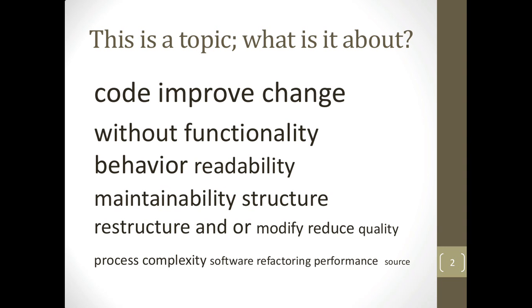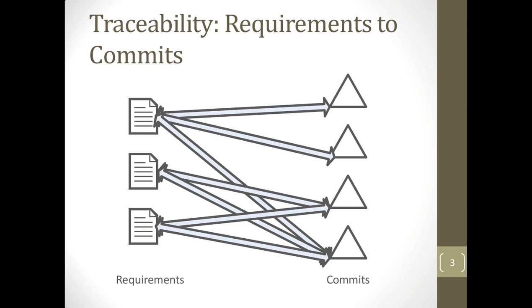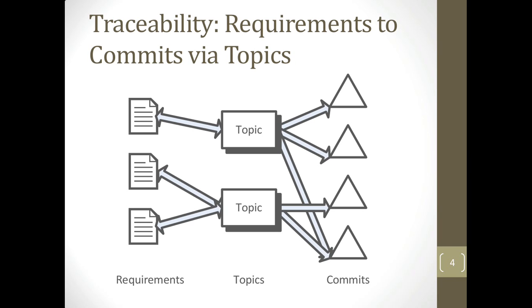We came across this because we wanted to relate requirements to commits. Implementation often becomes out of sync with actual requirements. At Microsoft we were given access to requirements of a very large software system, and we wondered if we could produce links between requirements documents and commits. One way to do this loosely is through topics: we take requirements, link them to topics, and then for every commit using the commit log message, we infer the relationship between that commit and the topic, giving us traceability between topics, requirements documents, and relevant commits.